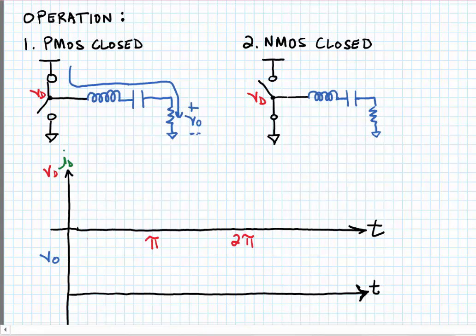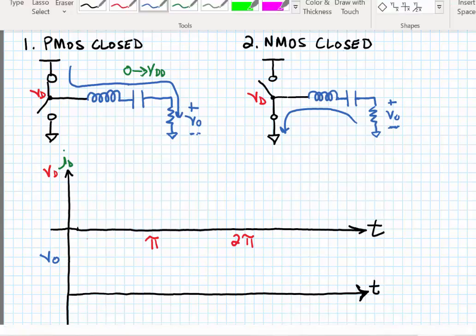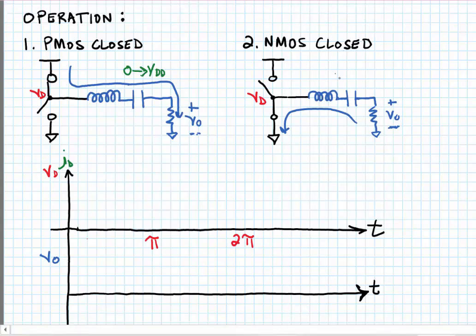The capacitor is charged from zero voltage up to VDD. During the second phase of the operation, the capacitor discharges through the NMOS, which is now closed, and the capacitor discharges from VDD down to zero.